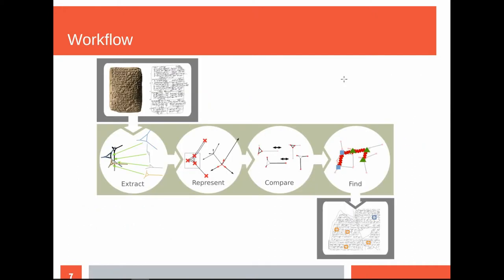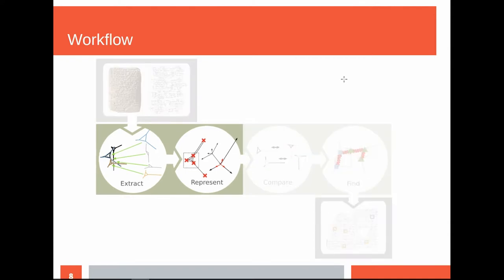My basic workflow looks like this: we have cuneiform tablets or more likely their transcriptions; we extract wedges from these cuneiform tablets; we represent those with a mathematical representation; we find a distance similarity function; and finally, with those foundational tools, we can find the symbols in a corpus. Let's start with the first part — the extraction and the representation.